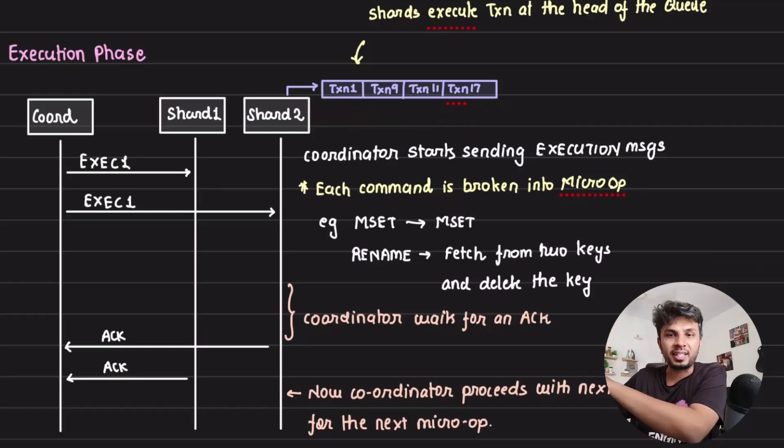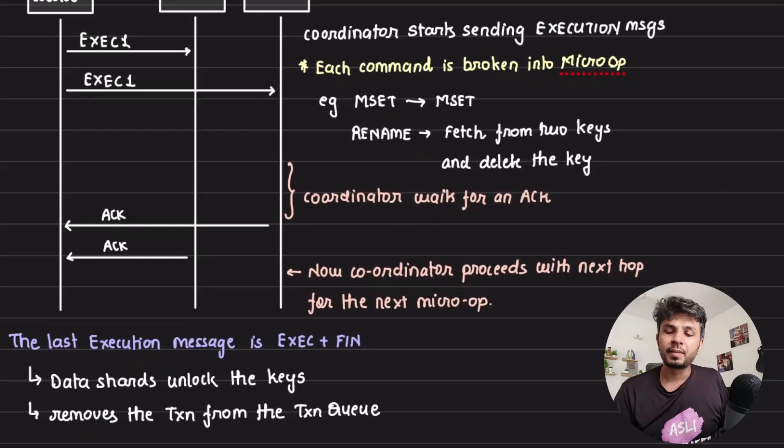The order of execution is maintained, which guarantees serializability. And there is a small block because anyway, the execution message will come from that other transaction which is at the head of the queue. So if it receives an execution message from let's say transaction 9, it will have to wait for some time until this is taken away. And that's how it works.